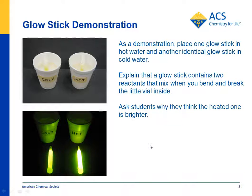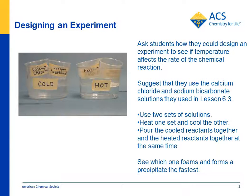So the question is: why did this happen? They know that a chemical reaction took place, but why did the temperature matter? You can have students investigate whether temperature affects a chemical reaction by using the same reactants they used in the last experiment — a reaction between calcium chloride and sodium bicarbonate. They could make a solution of calcium chloride and sodium bicarbonate, and another solution of calcium chloride and sodium bicarbonate, and put one pair in cold water and the other pair in hot water.